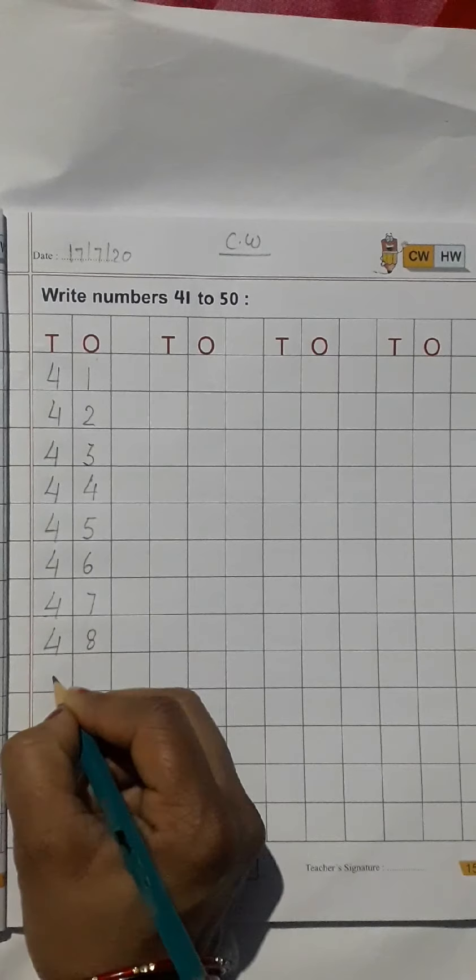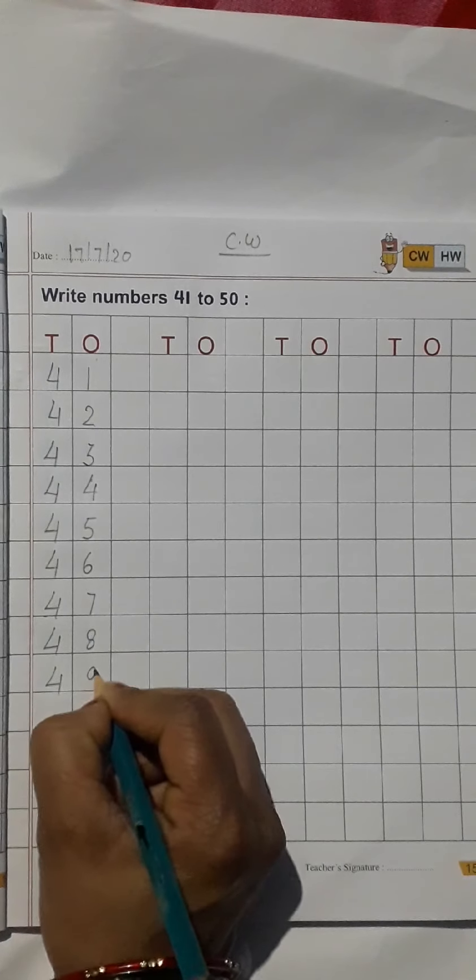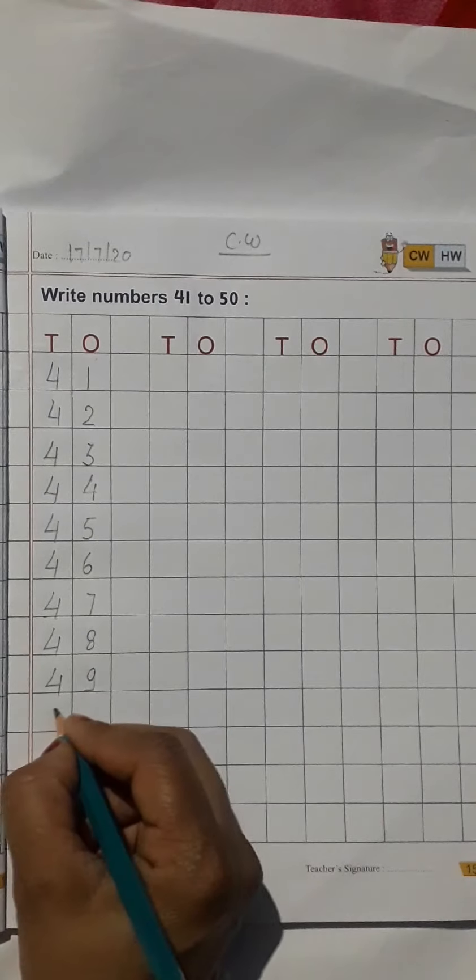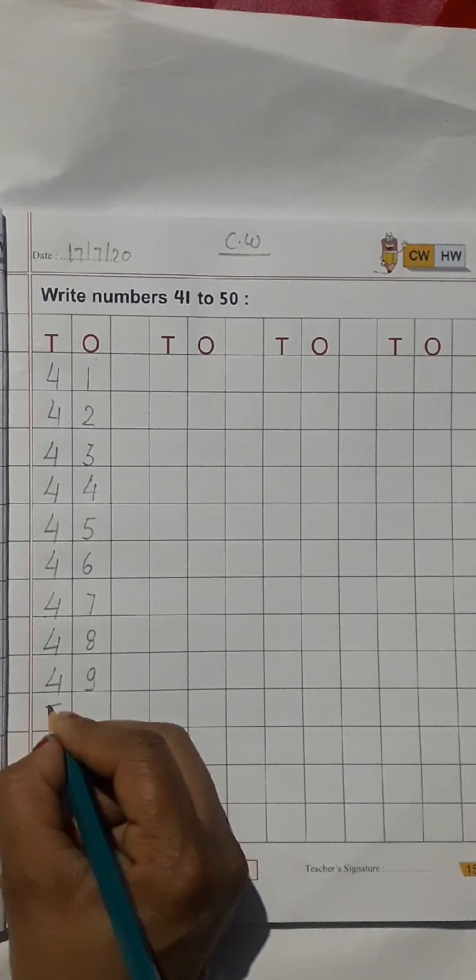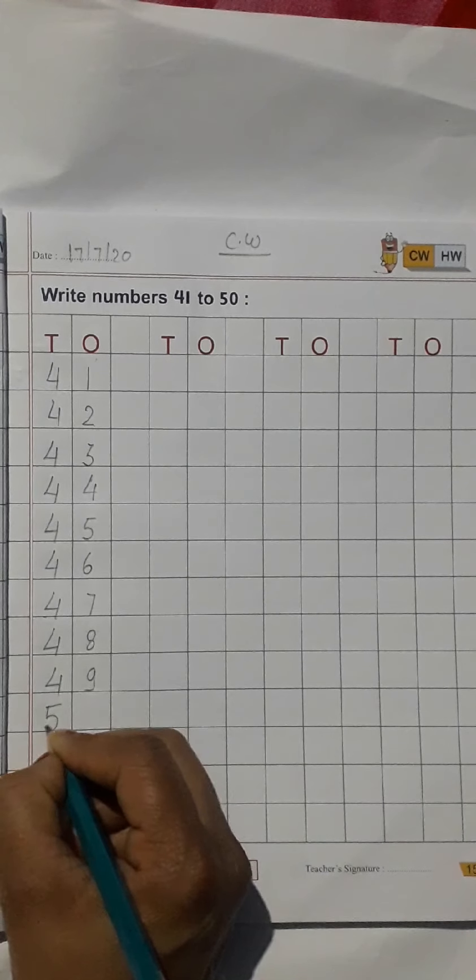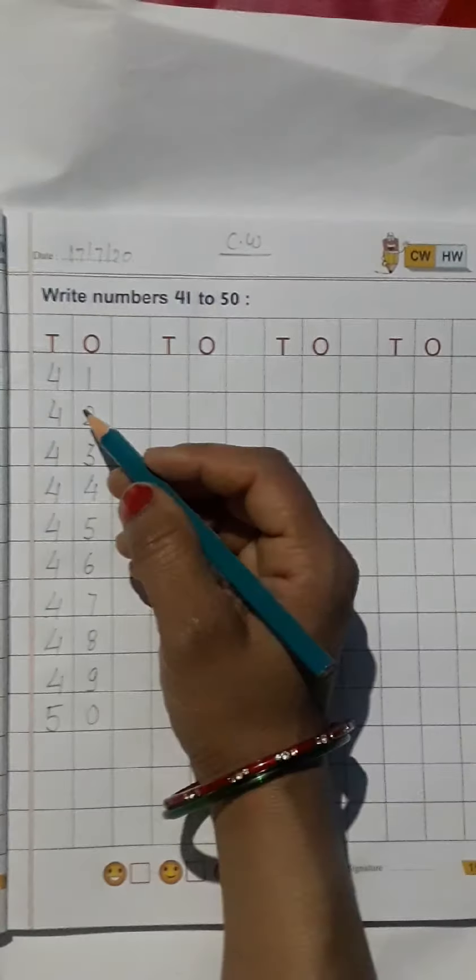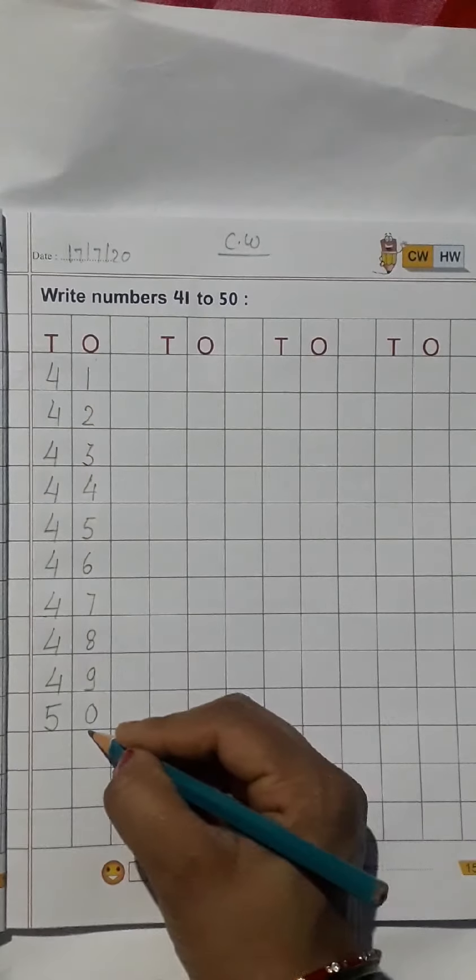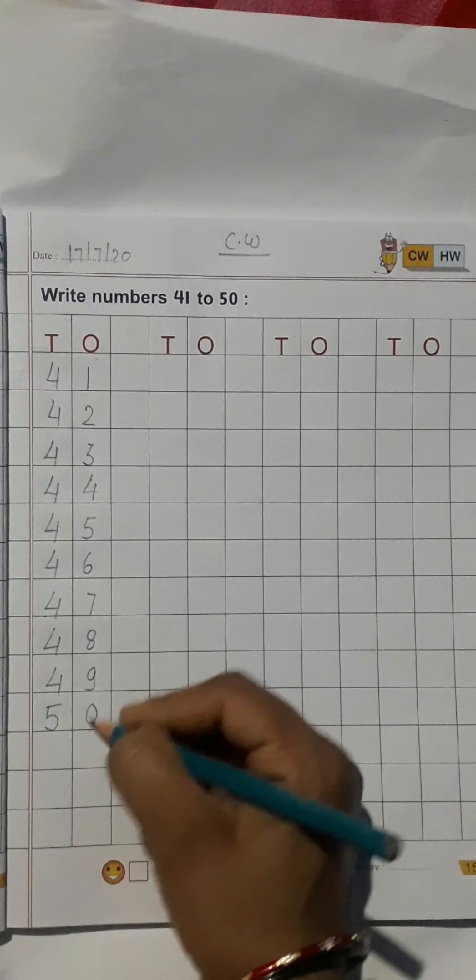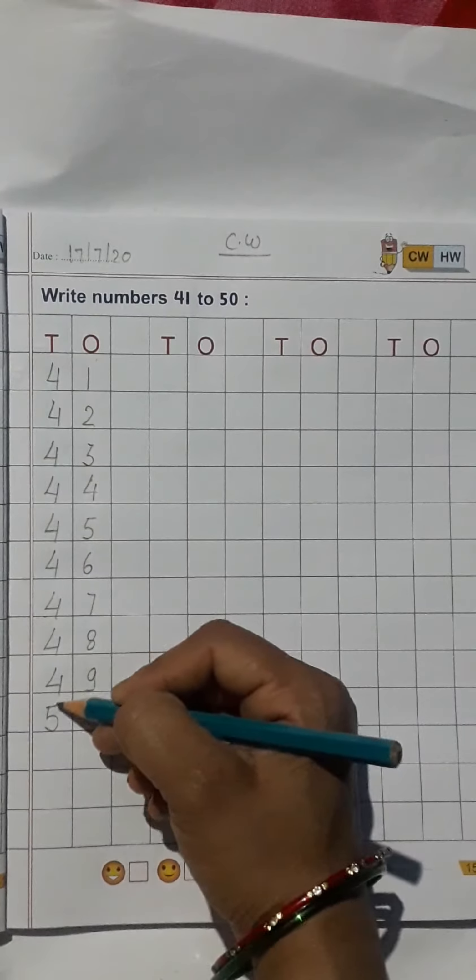48, 49. Now next number, 50. Okay, 41 to 50 are two-digit numbers. 4, 4, 4, 4, and 5 in the tens place, 1 to 9 in the ones place.